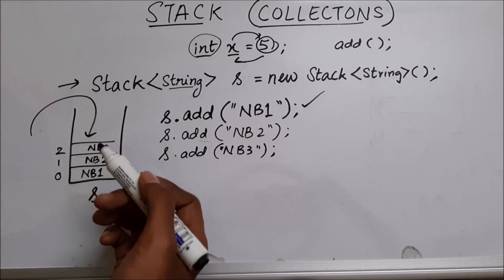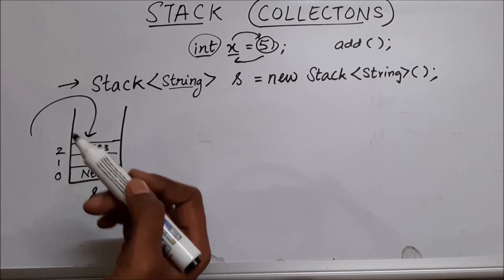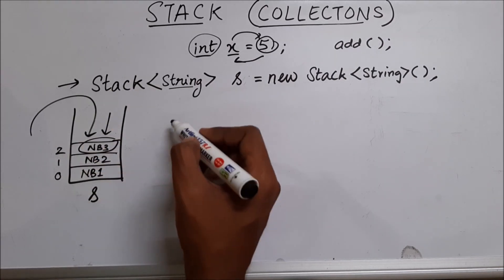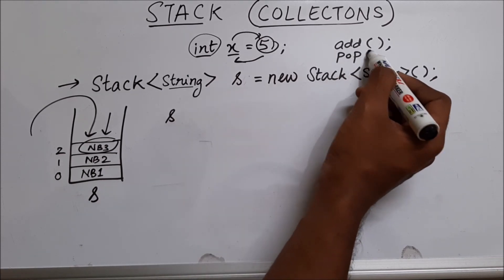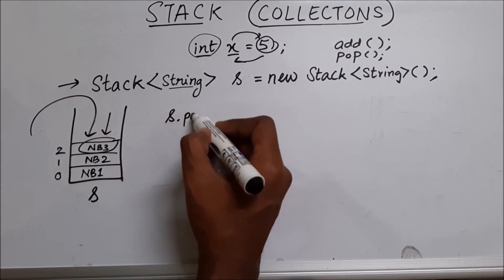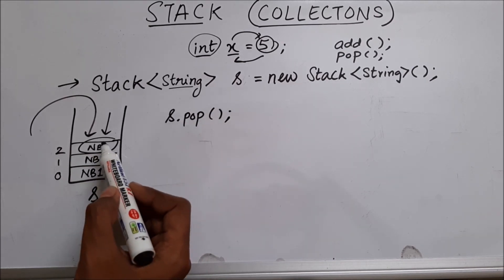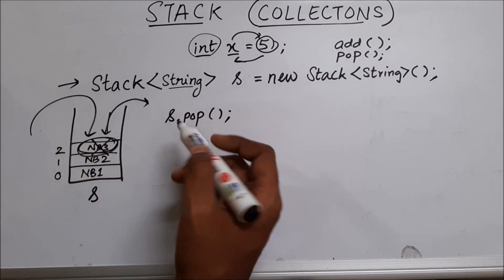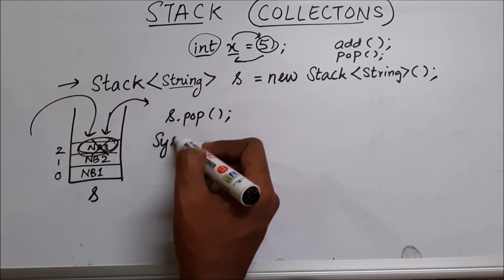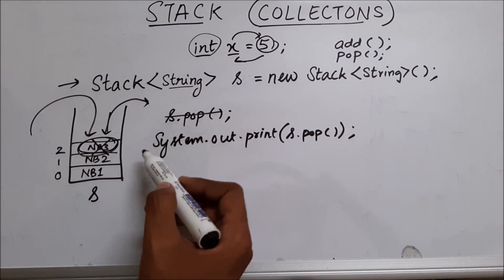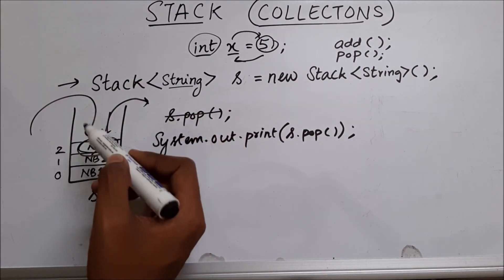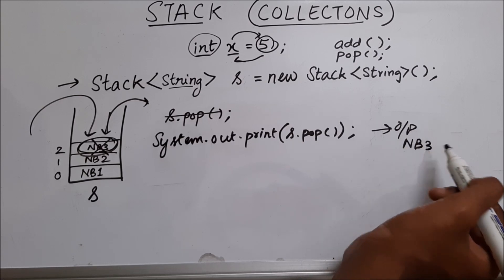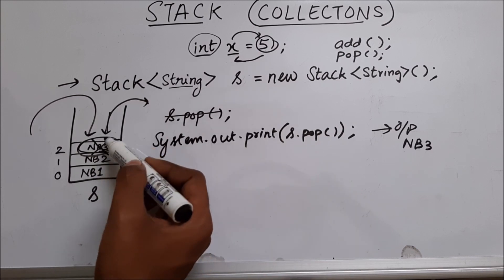Now let's see how we can remove a value from this stack. As I mentioned, when we try to remove something from the stack, the one which went in last — the topmost element — is the one which is going to come out. The method we have for this is pop. When we use the pop method, it is going to take the topmost value and return it, removing it from the stack. So instead of just calling pop, you can print this. NB three will be popped from the stack and printed. So the output of this line will be NB three. Pop pops out the topmost element of a stack.